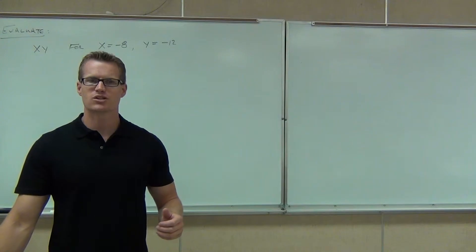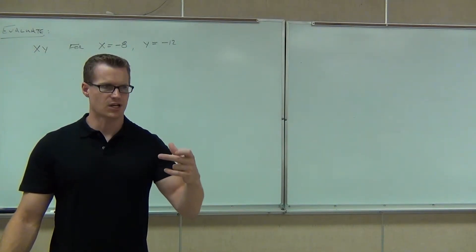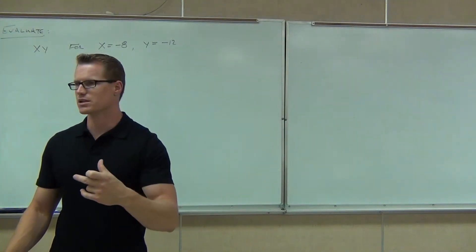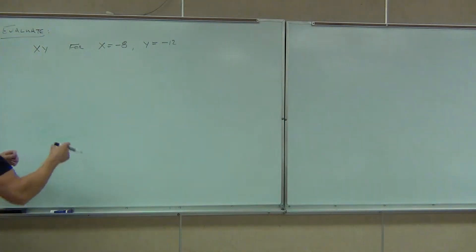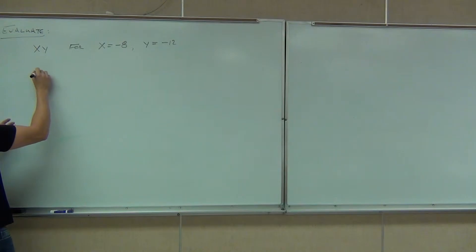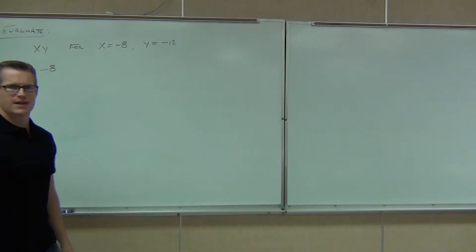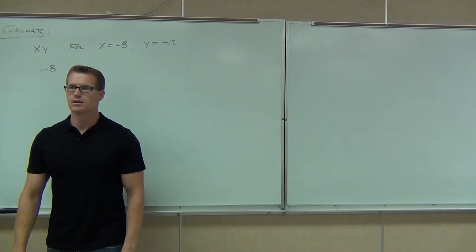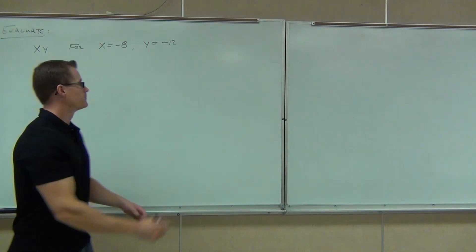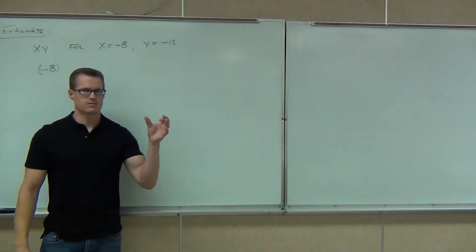So plug it in. The only thing you've got to make sure that you do is make sure that you have the signs with those numbers. Don't lose any. Because if you lose some, you're going to be off by a positive or negative. So in our case, x was negative 8. So instead of x, we write negative 8. Tell me one way I can show that that means negative 8 and not minus 8. What can I do to that? Let's do that — put parentheses around it.